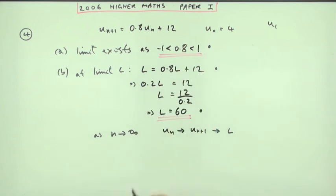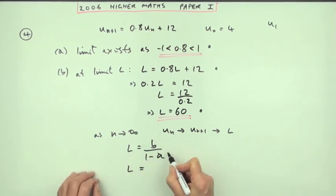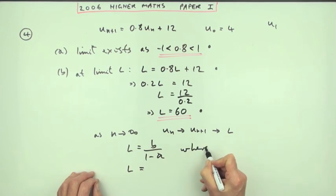The alternative to doing that would be to put down the formula L equals b over 1 minus a, which tends to be frowned on in the marking schemes. Certainly putting that down on its own gets no marks. You have to show you understand what the different parts mean. So to get the first mark you'd have to put the numbers in. You'd say, you can always put this down and say, put this at the side here.